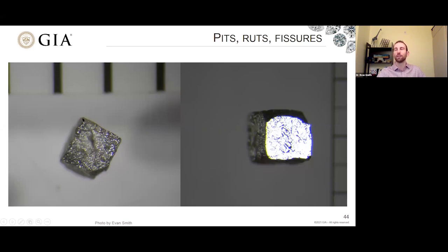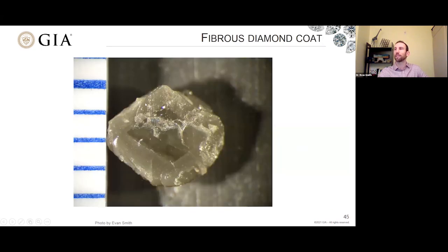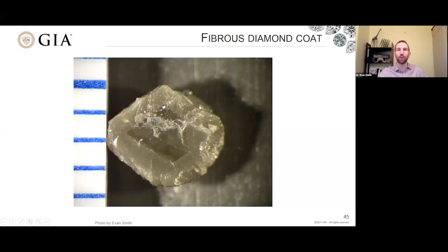This diamond looks kind of gray and cloudy or opaque — this is an example of something called fibrous diamond. Fibrous diamond can sometimes occur as a coat around an octahedral, perfectly gem-quality, colorless octahedral core, with this coat of fibrous diamond looking opaque or cloudy. It can be gray, green, or yellowish. So what exactly is this fibrous diamond, and what do we mean by fibrous anyway?